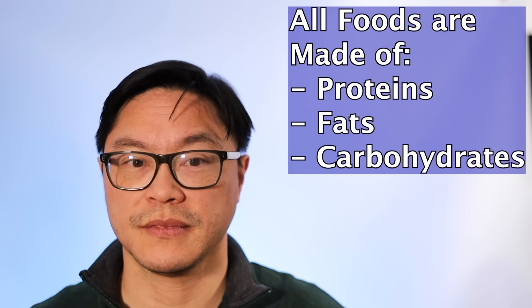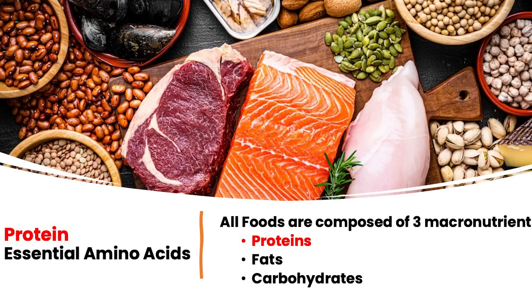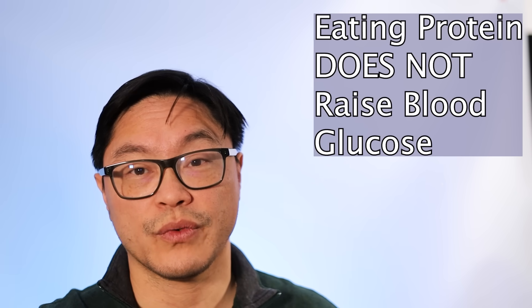All foods are composed of three macronutrients: proteins, fats, and carbohydrates. Proteins, such as you might find in meat, fish, nuts, and lentils, contain amino acids. There are certain essential amino acids, meaning our body can't make them. So if you eat a zero-protein diet, eventually you're going to get sick. These amino acids are not glucose and they don't raise your blood glucose.